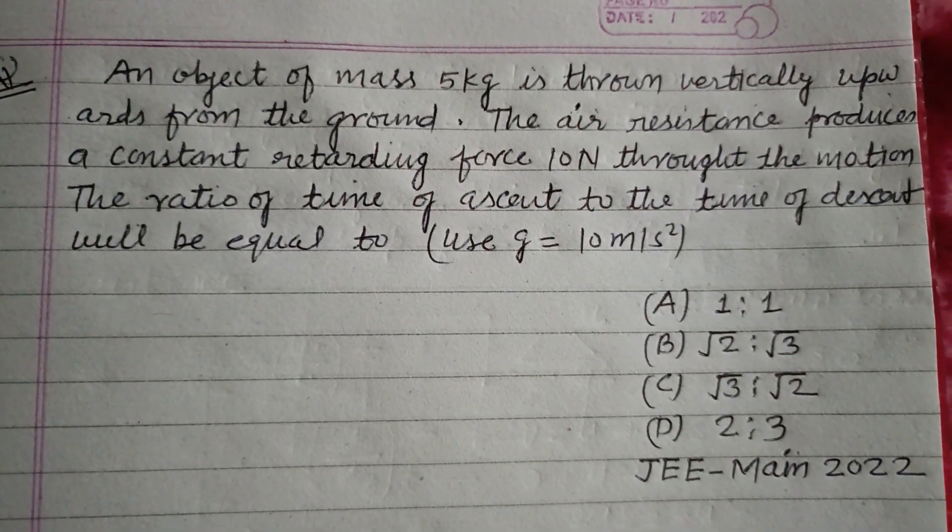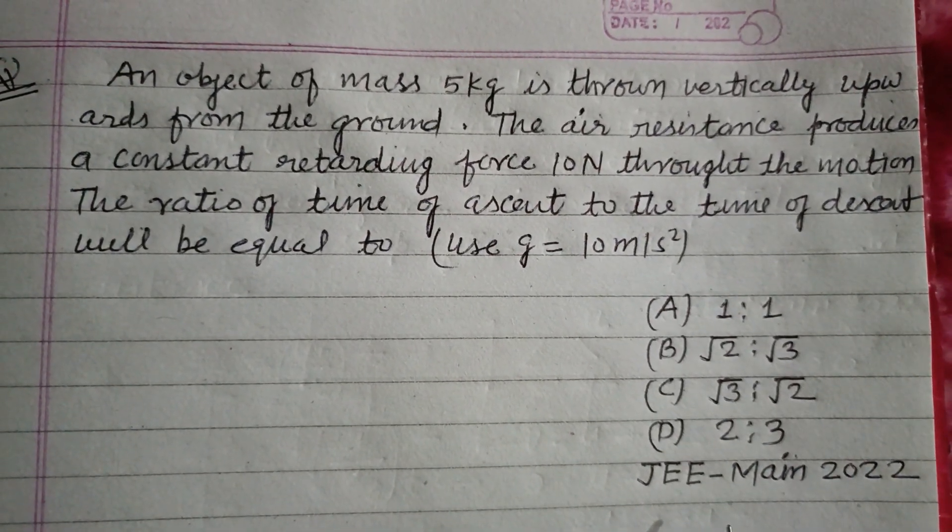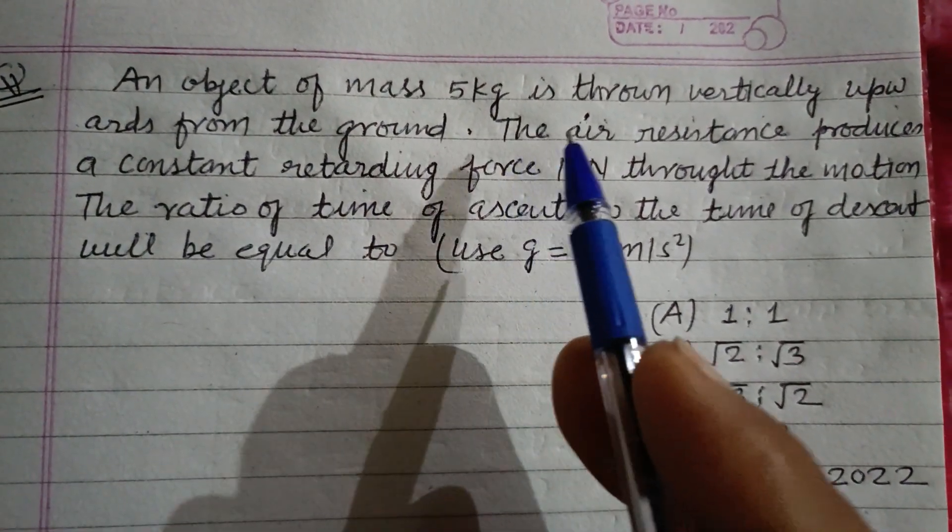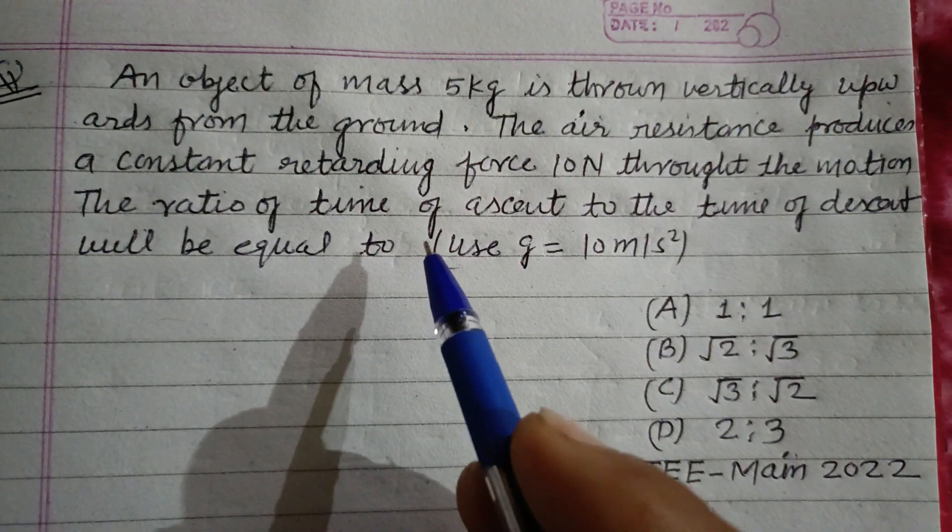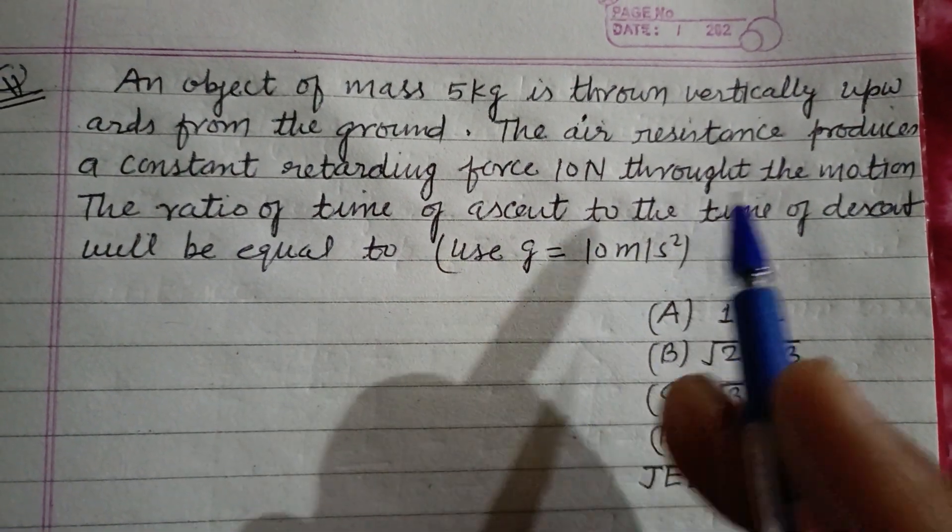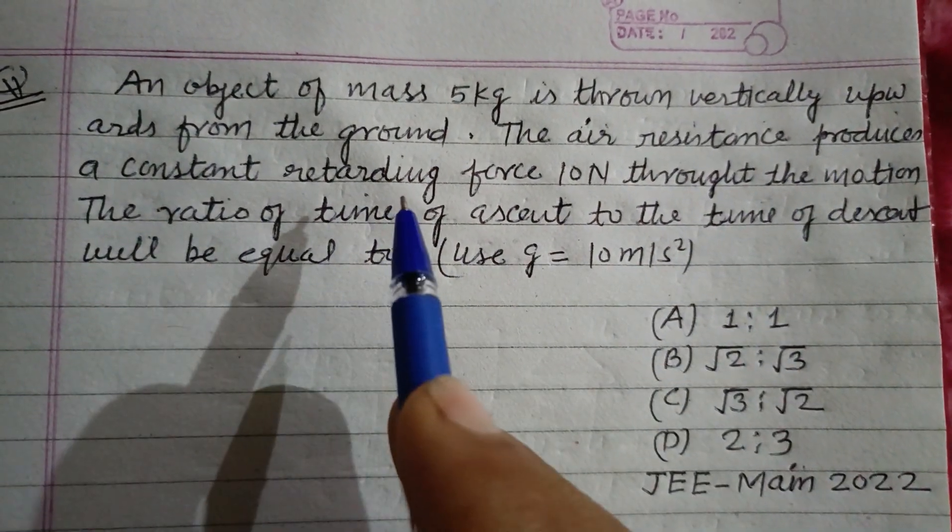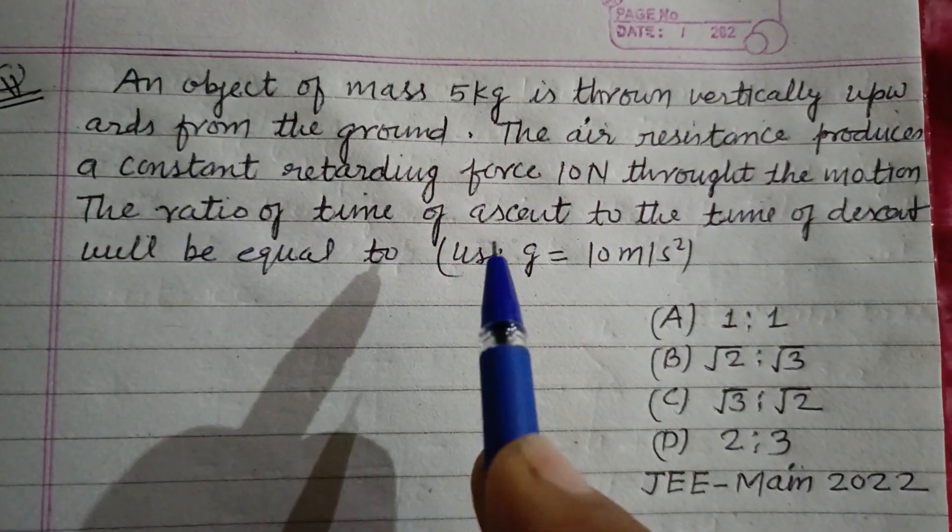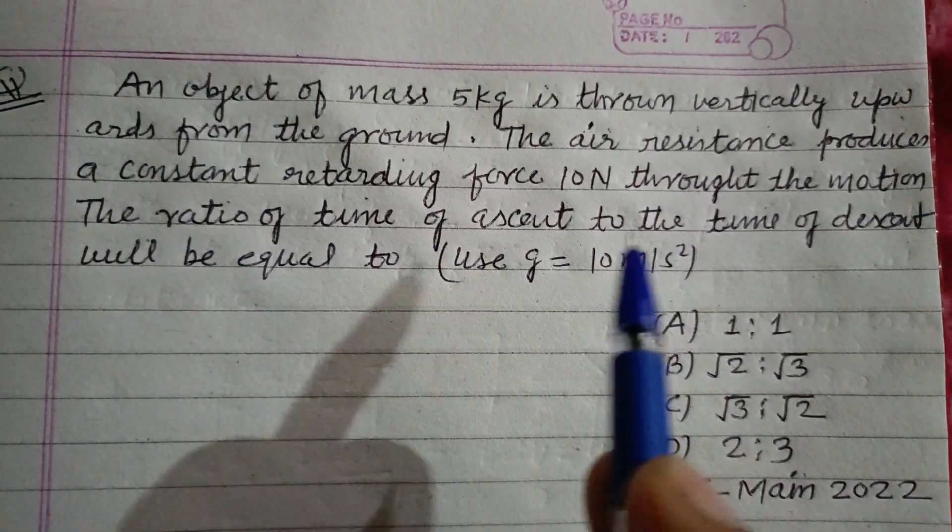Hello viewers, warm welcome to this YouTube channel. This is a question from JEE Mains 2022. An object of mass 5 kg is thrown vertically upward from the ground. The air resistance produces a constant retarding force of 10 Newton throughout the motion. The ratio of the time of ascent to the time of descent will be equal to?